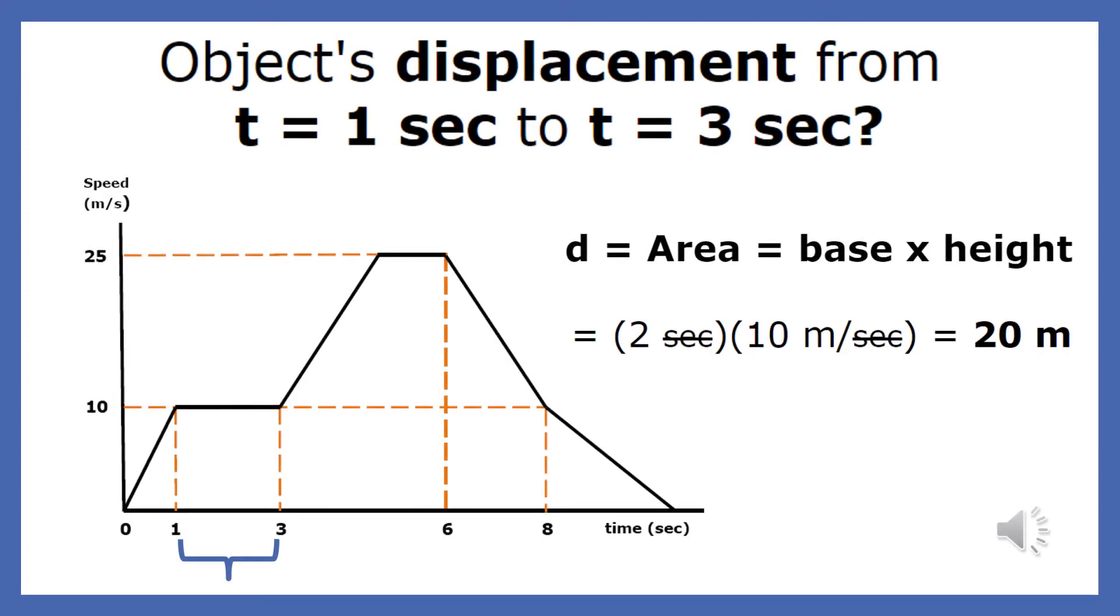Here is the v versus t plot of an object that changed its velocity several times. If we want to find out how far the object traveled between 1 and 3 seconds, we could use d equals v average times t, or we could find the area underneath the plot during that time.